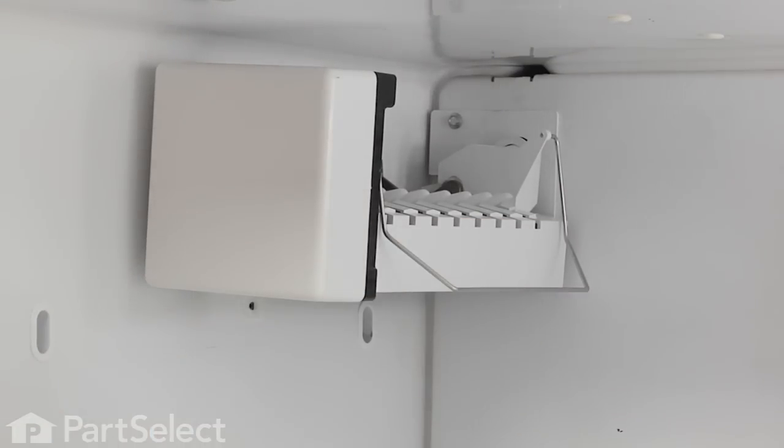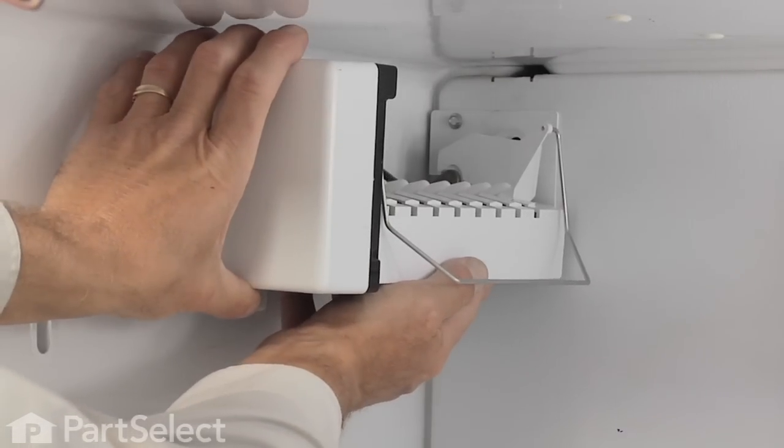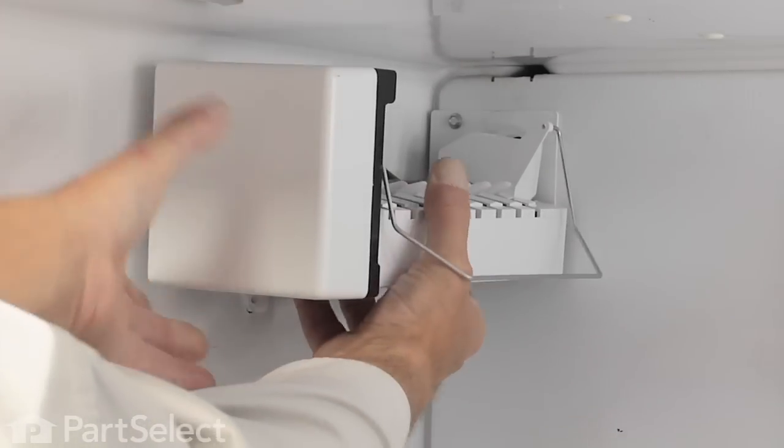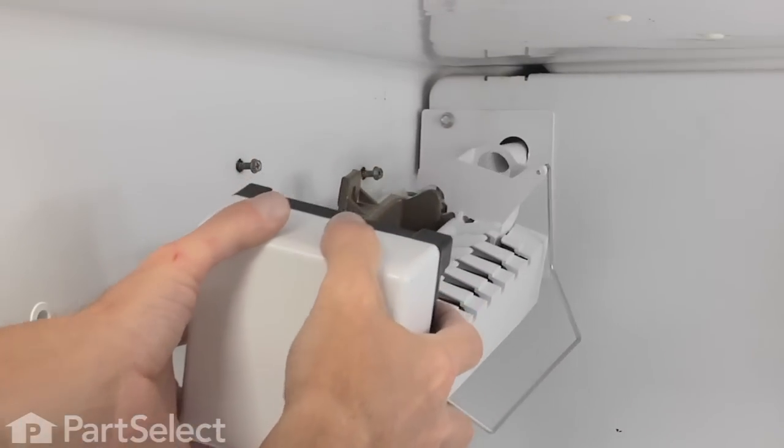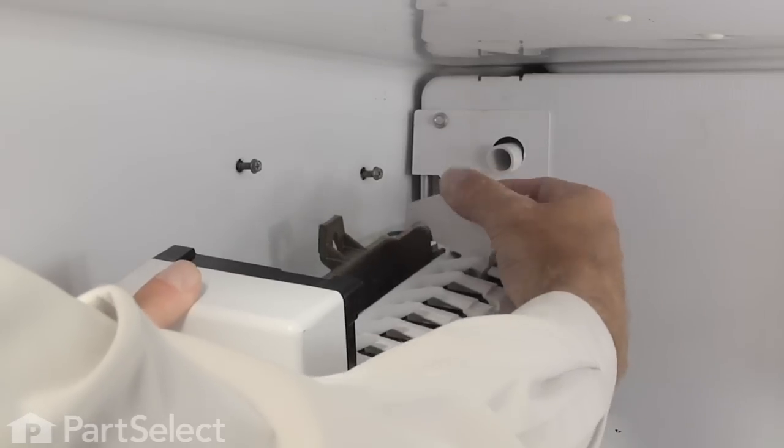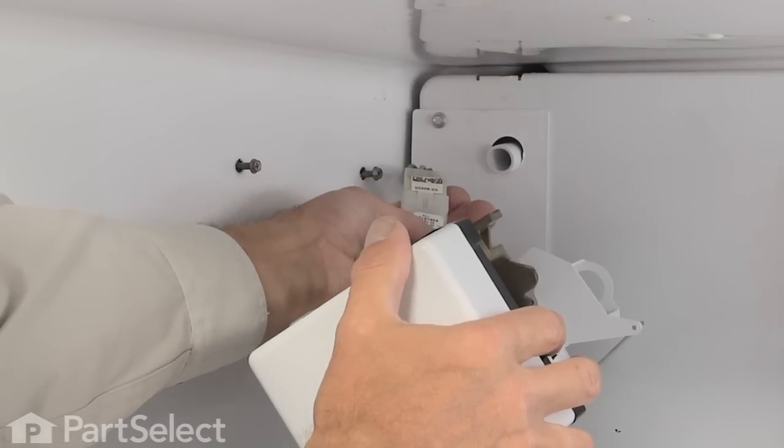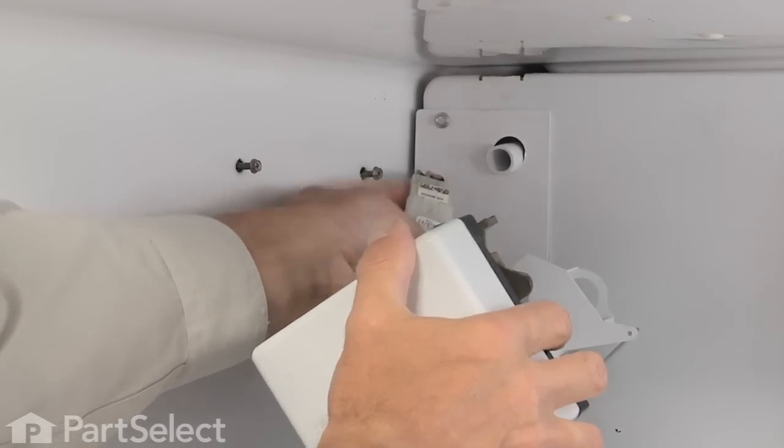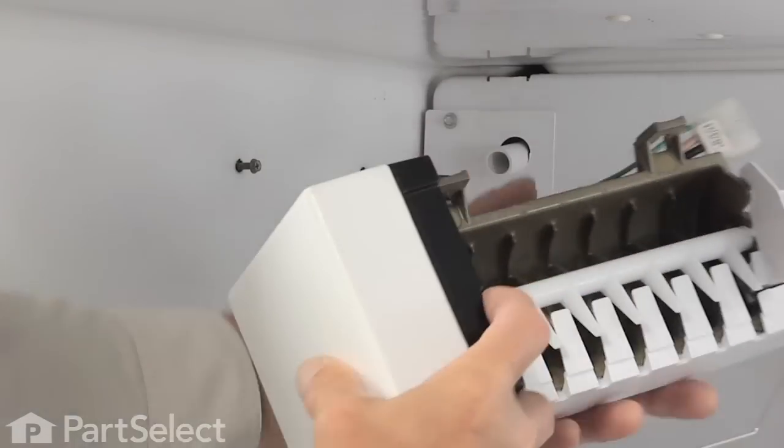Once we've loosened the two top screws, remove the bottom one and gently lift up on the ice maker, tilt it away from the wall and pull it towards you, allowing the fill tube to move through the hole into the reservoir and exposing the wire harness connector at the back. Lift up on the tab on the wire harness and separate it.